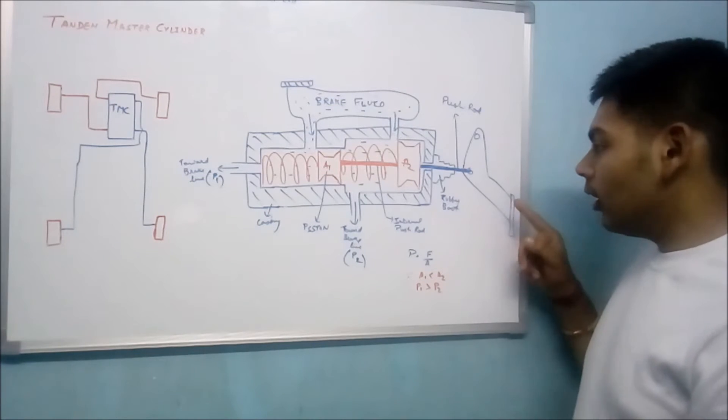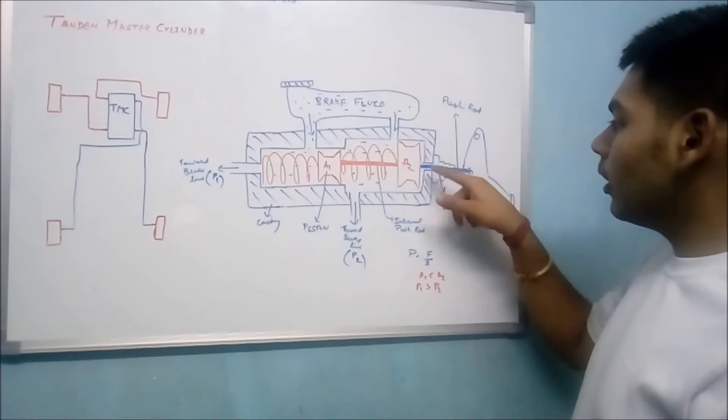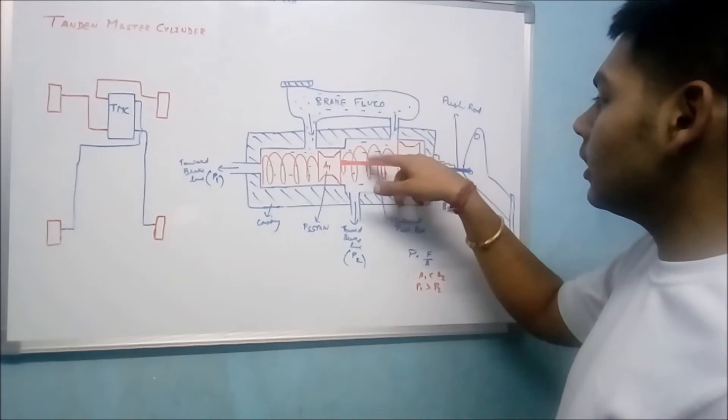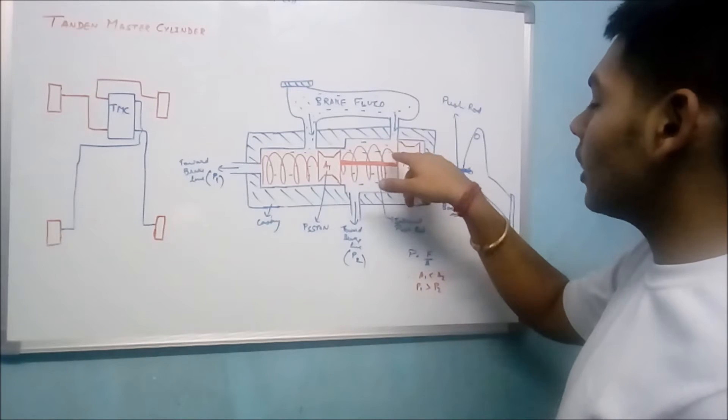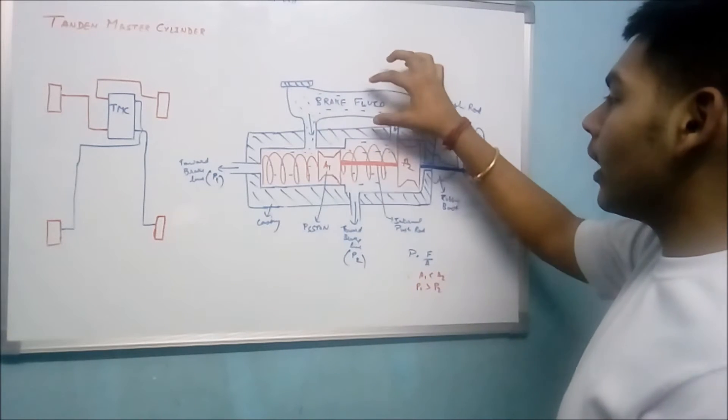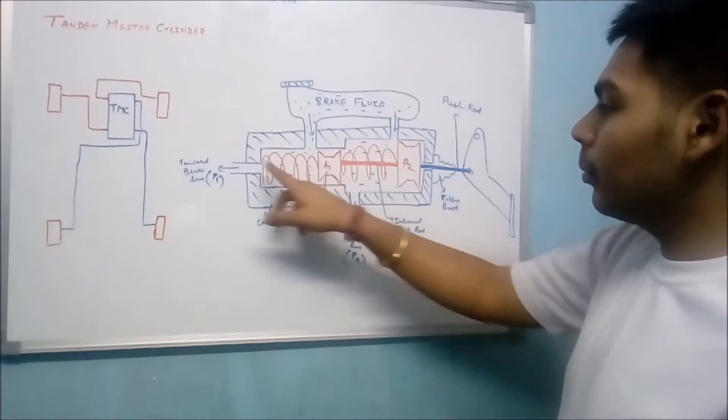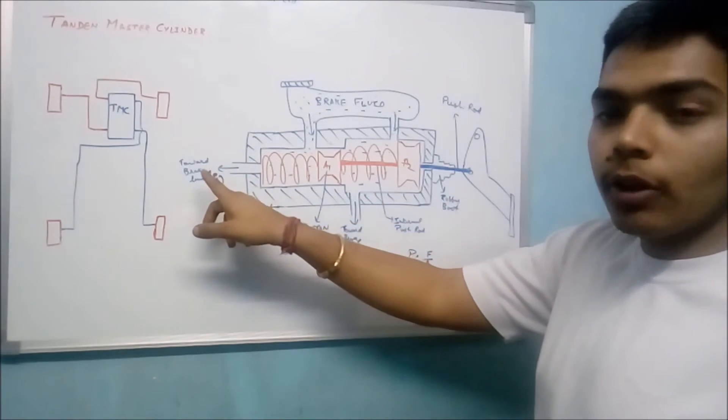This is the brake pedal, the push rod, the rubber boot, the pistons, the internal push rod, the spring. These blue dots are the brake fluid. This is the brake fluid container and the brake fluid inside it. This is the casing and these are the ports which will be connected to the brake line.